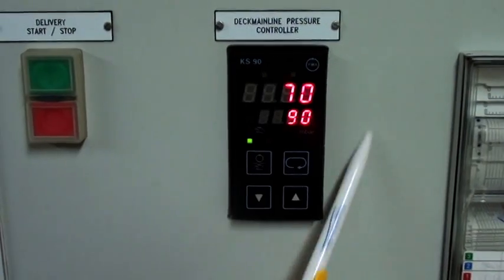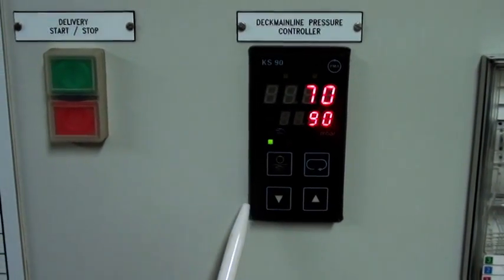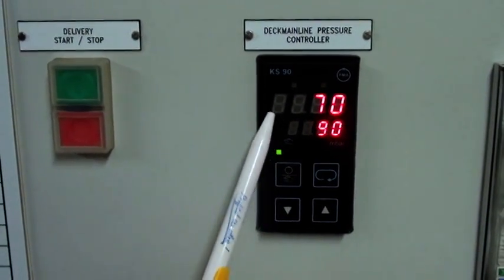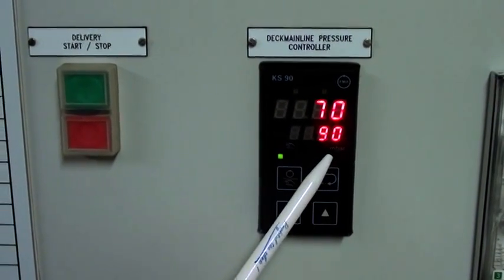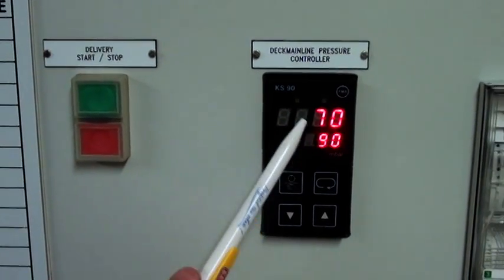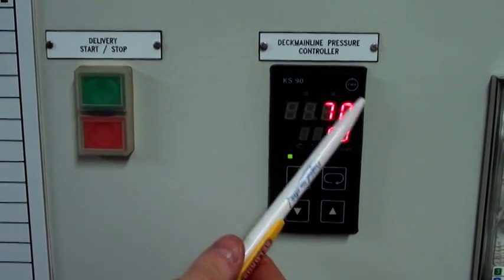On the other hand, you have the pressure controller indicating the set point of the pressure in millibars and the current pressure in the line.